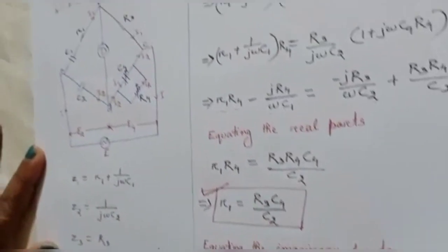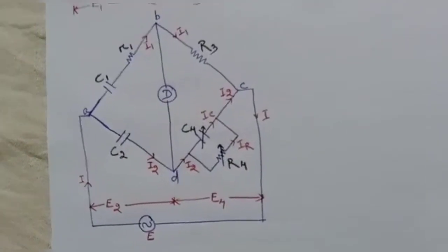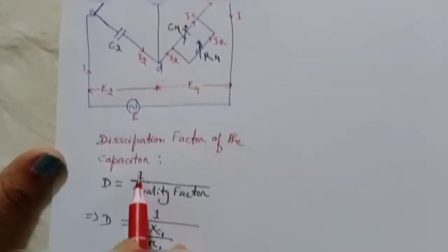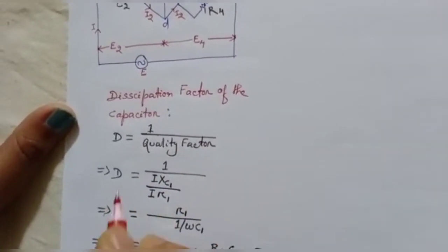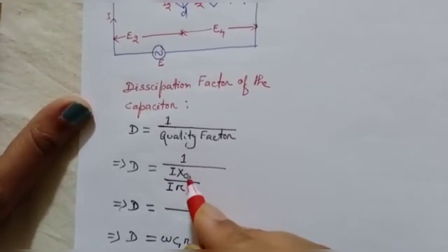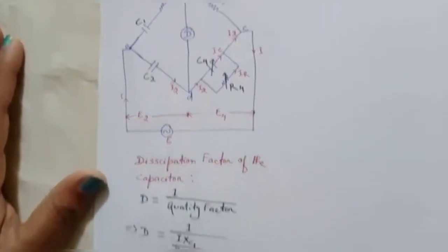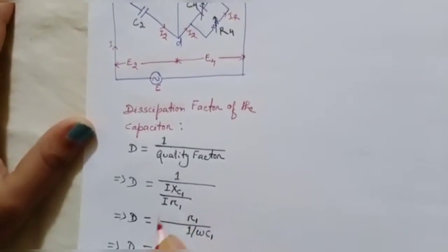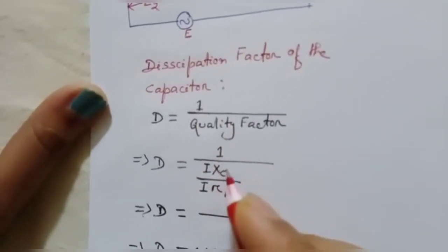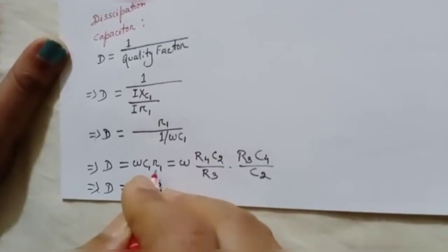Now we also need to find the dissipation factor of the capacitor. The dissipation factor D equals 1 over quality factor Q. The quality factor is the voltage across the energy-storing element — that is, voltage across C1 — divided by voltage across R1. So Q equals I·XC1 divided by I·R1, and D equals 1 over Q, which gives D equals R1 times ωC1, or equivalently D equals ωC1·R1.